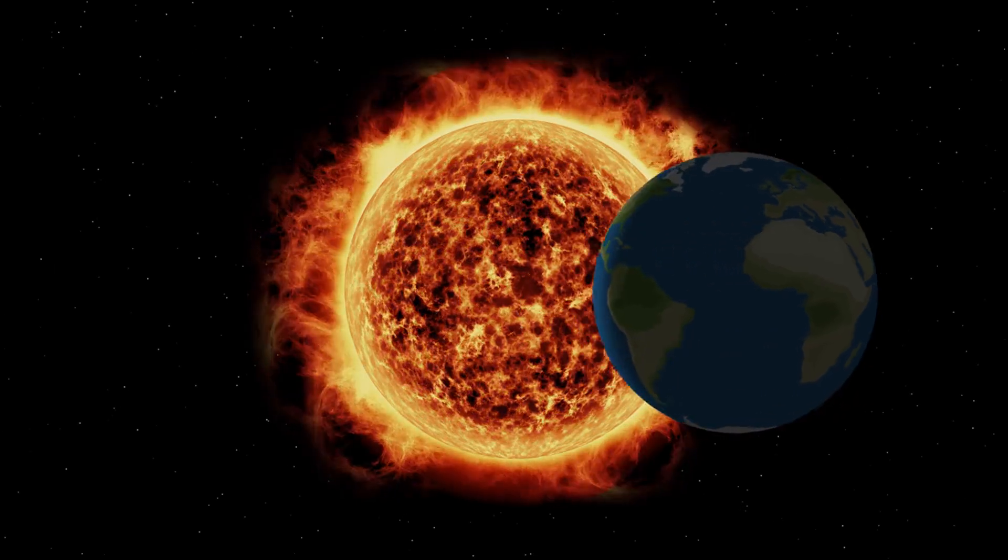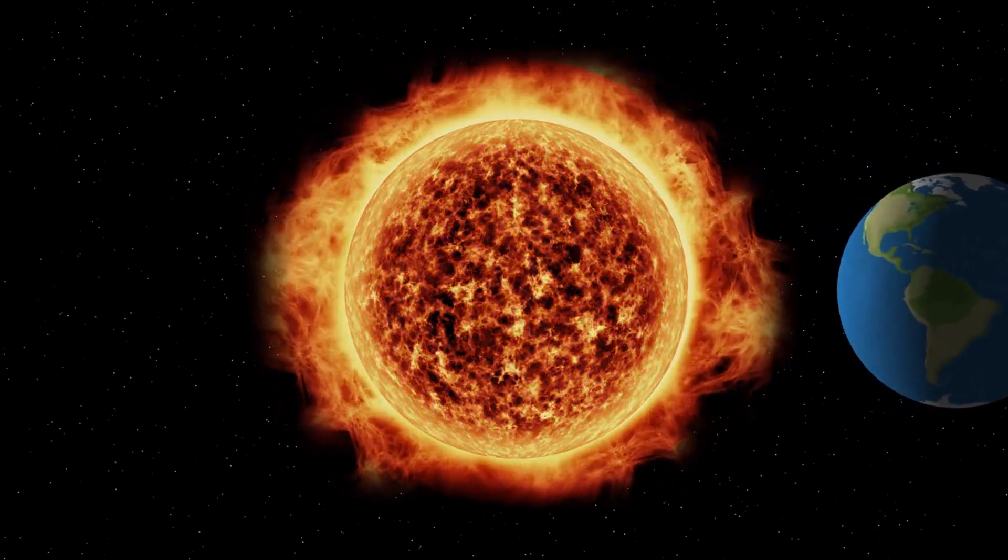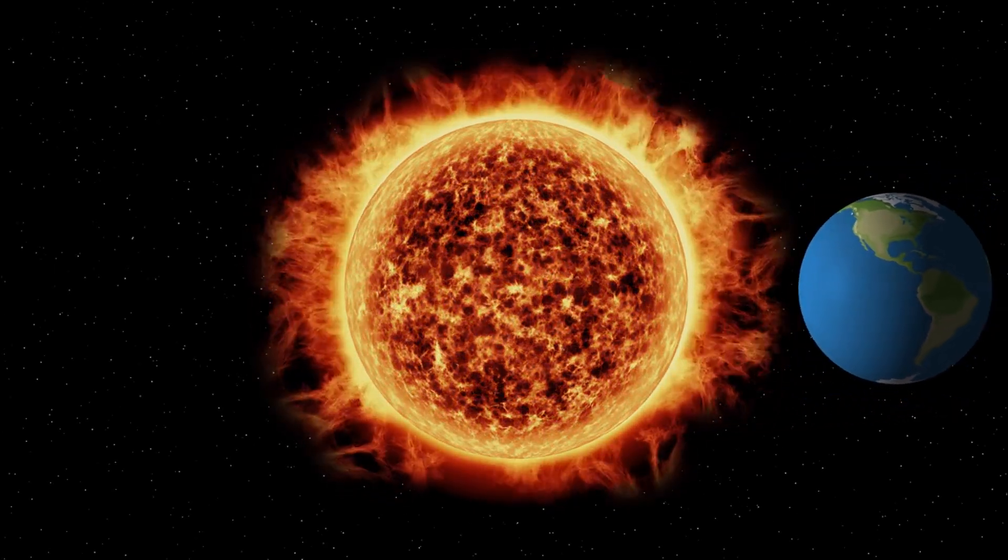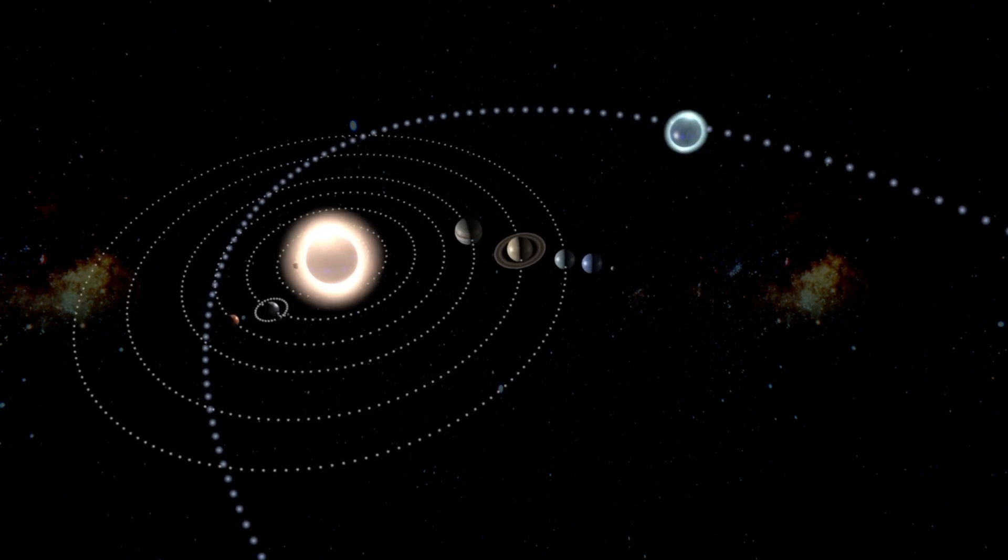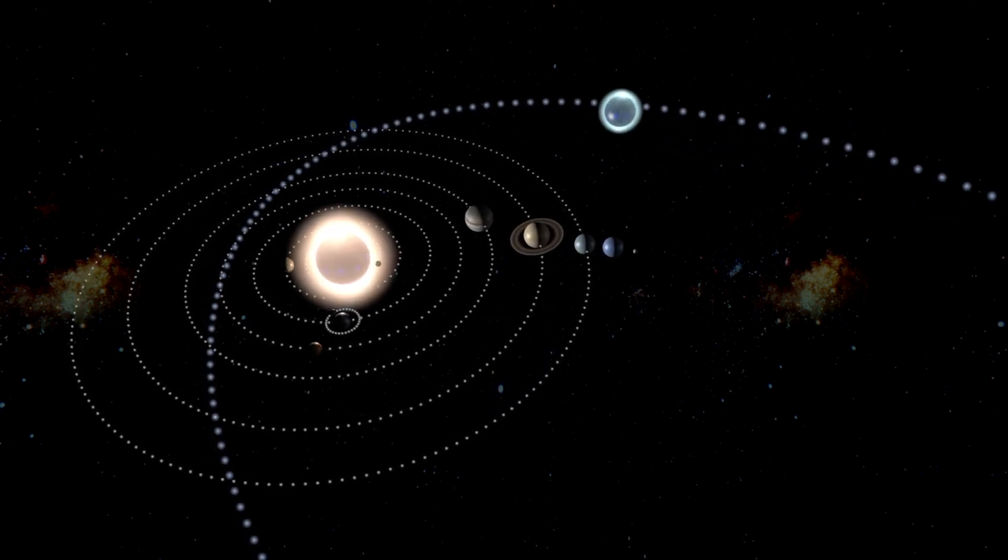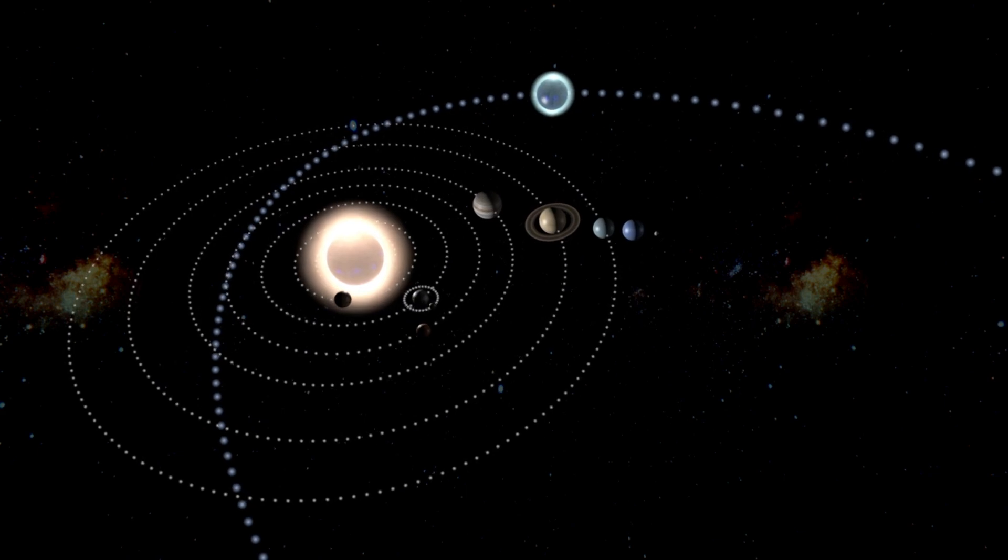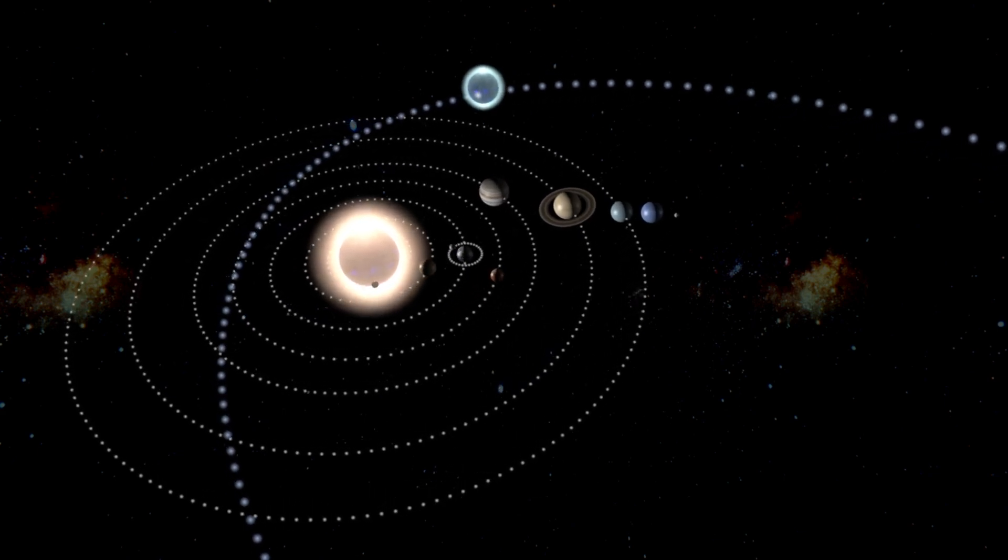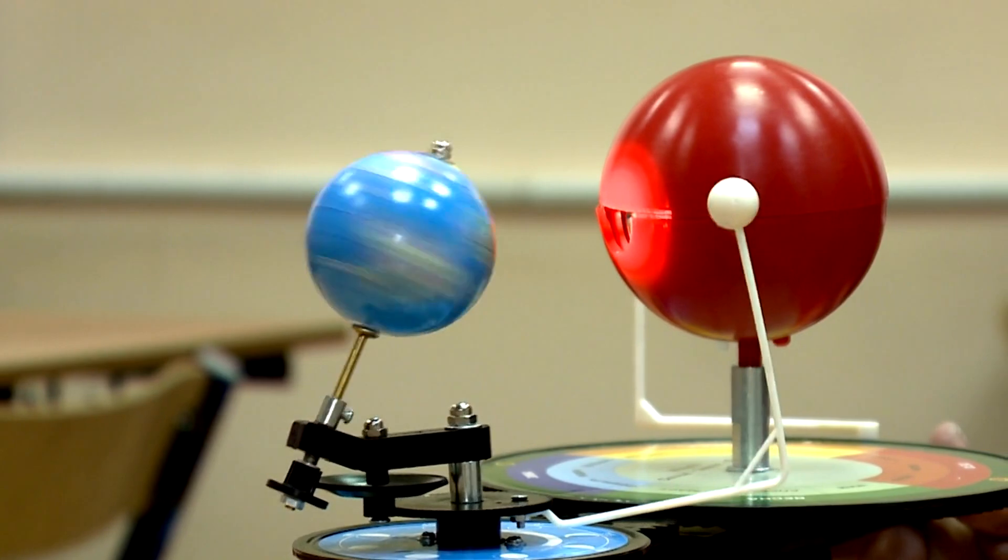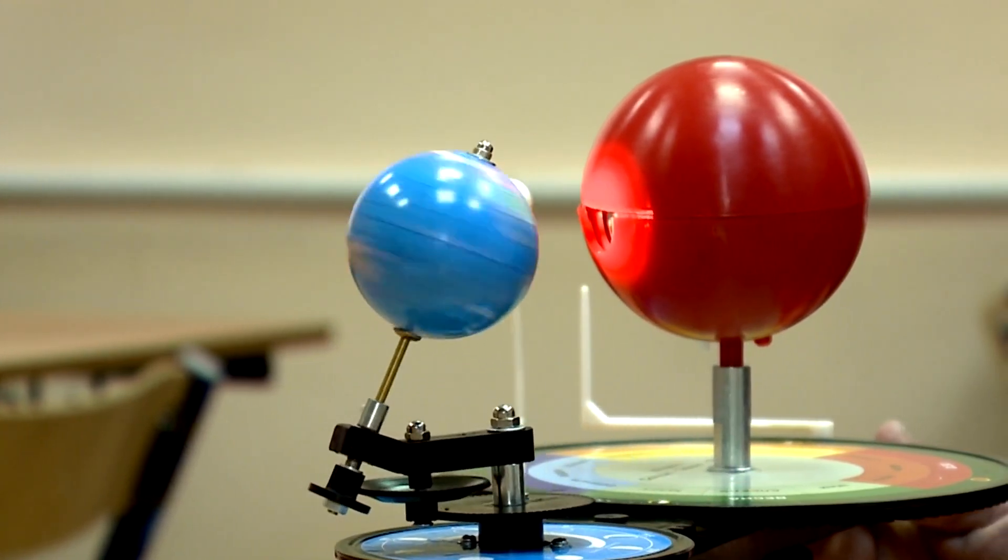This is what we call the three-body problem. Picture the Earth and the Sun engaging in their eternal dance around their shared center of mass. The Earth's orbit around the Sun is an ellipse, a shape that's been etched into the cosmos by the gravitational pull between these two bodies. But what happens when we throw another dancer into this celestial ballroom? Let's say the Moon.